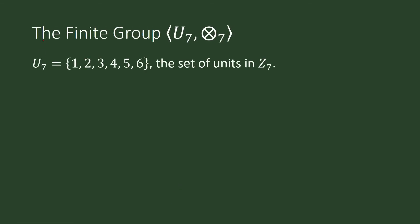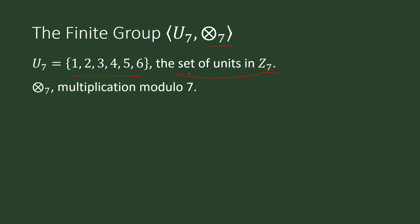This next group is the set of units in Z_7, denoted Z_7*, with multiplication modulo 7 as the operation. We remove 0 from Z_7 because any integer multiplied by 0 is 0, so we cannot find a multiplicative inverse for 0.